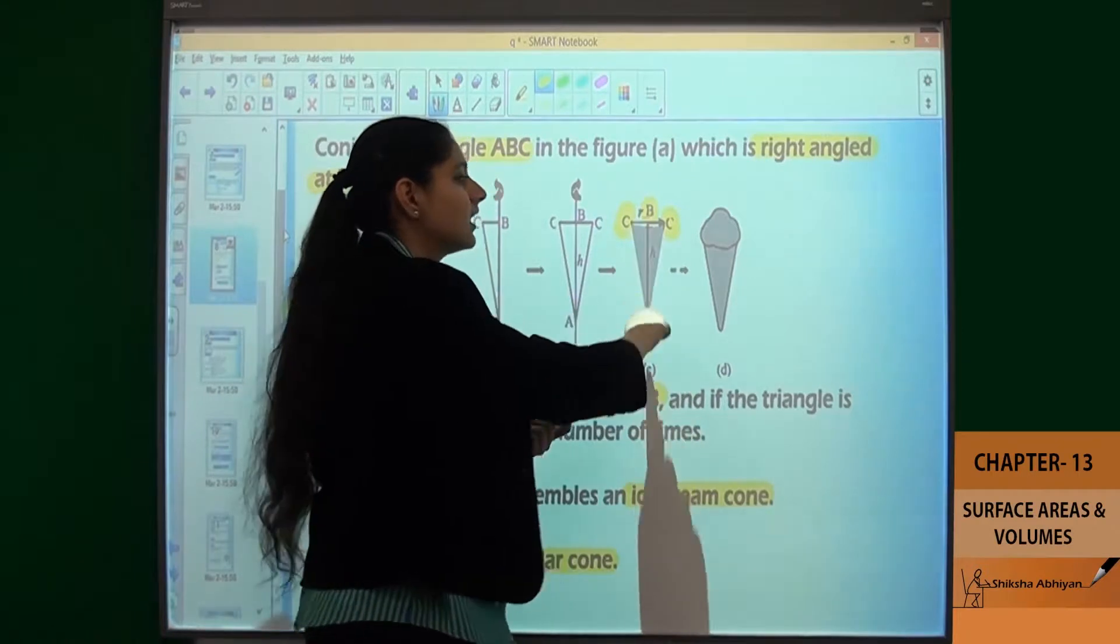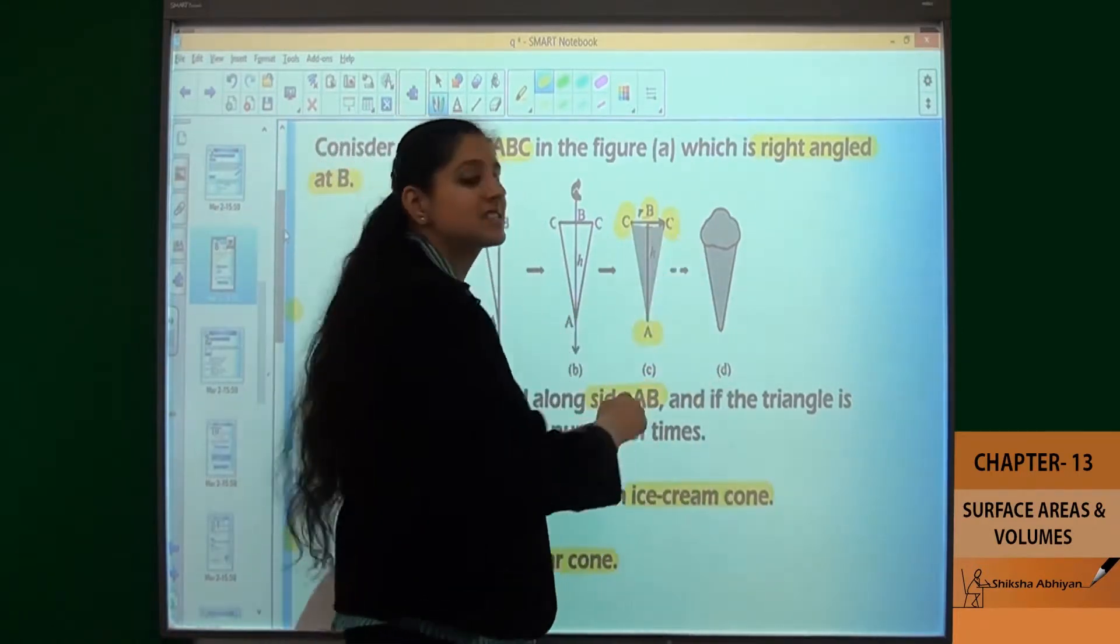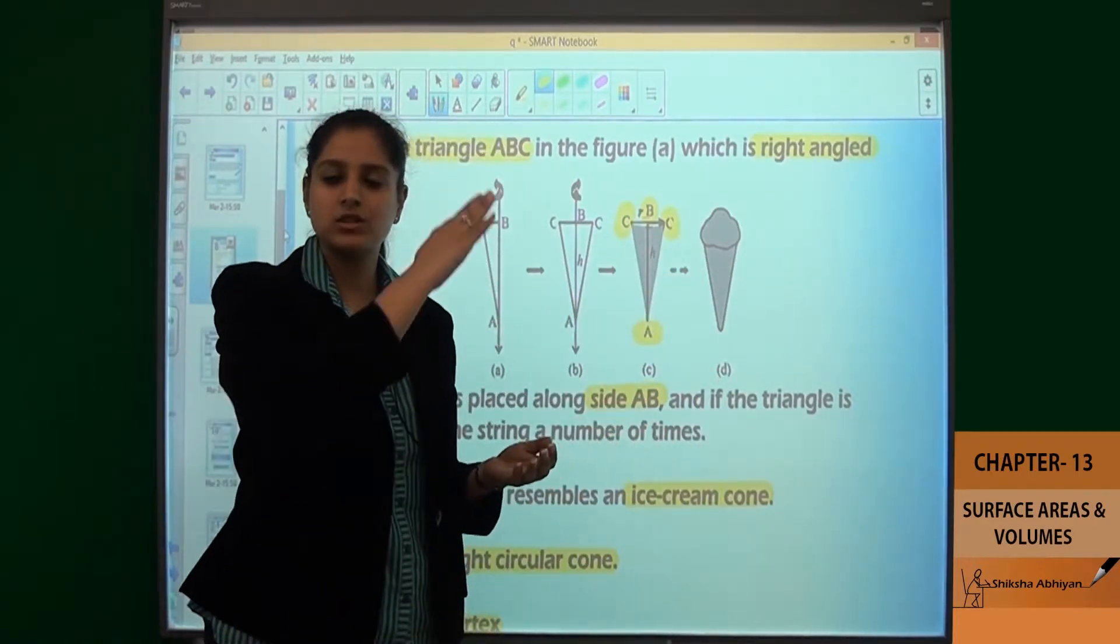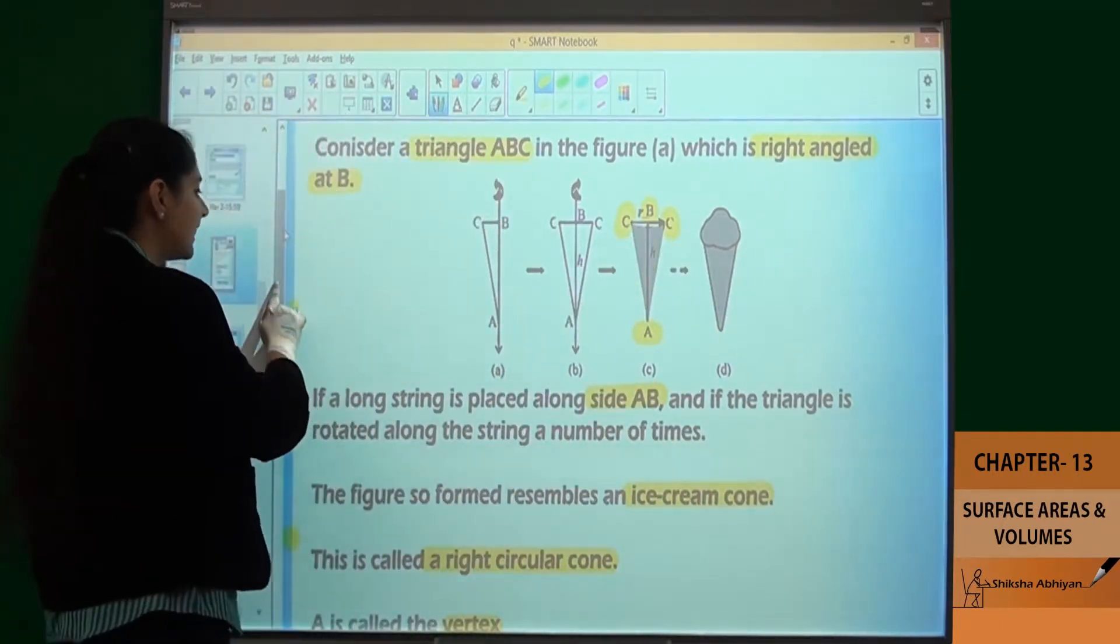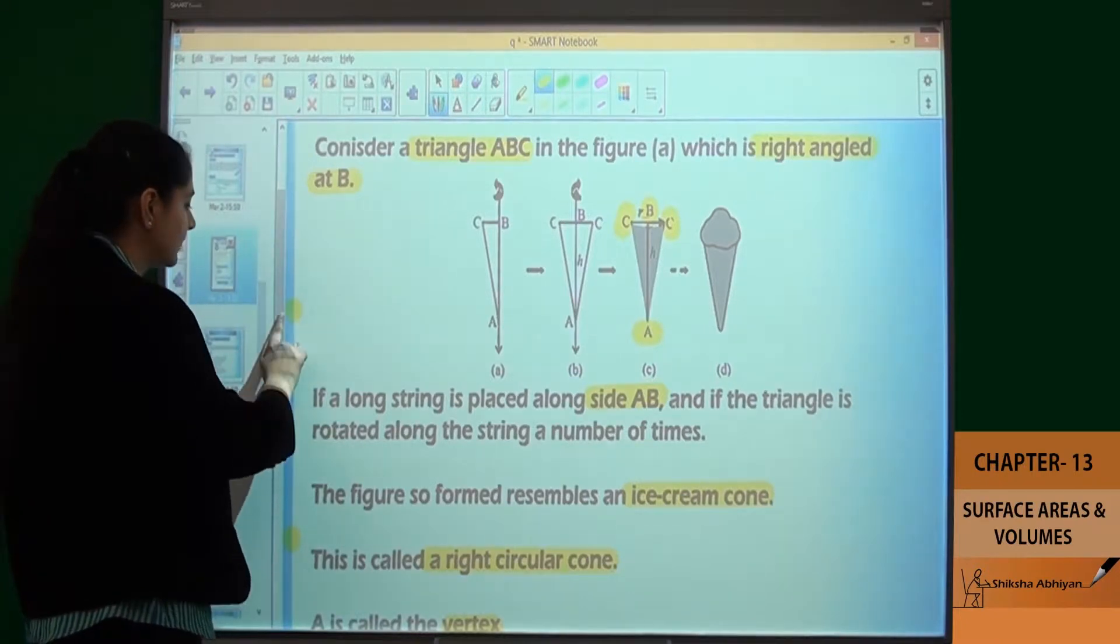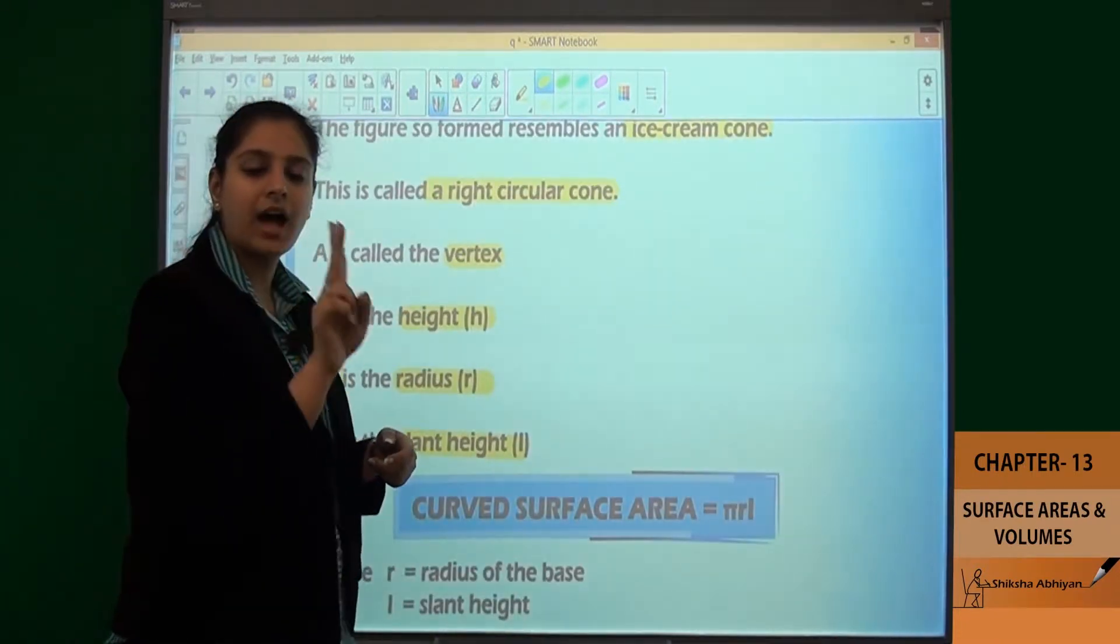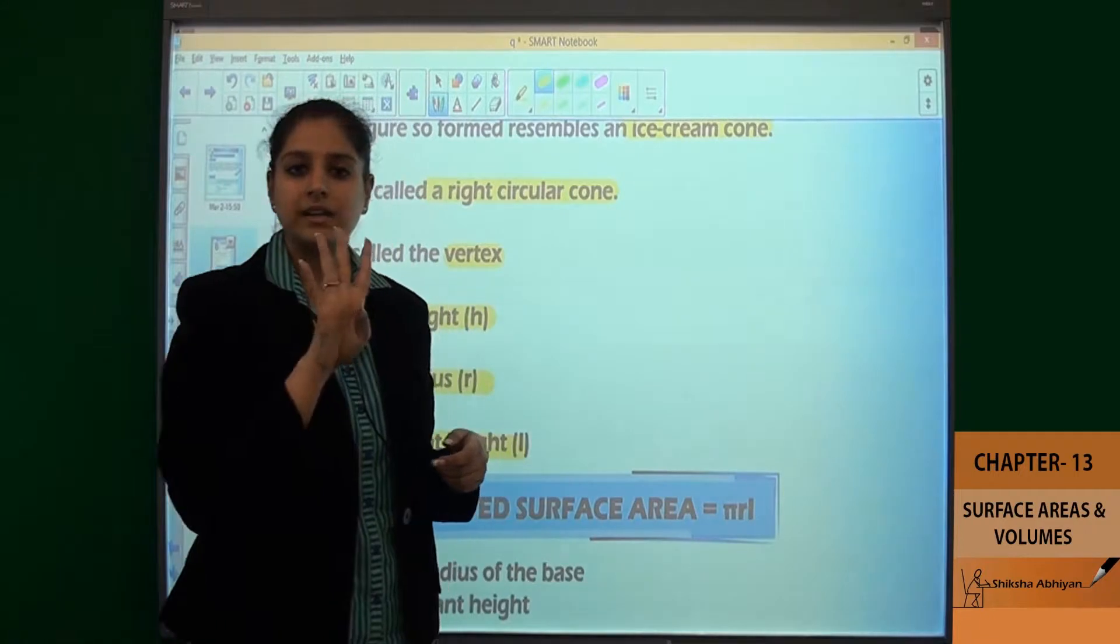AC is the slant height. That tilted side is called the slant height. And BC is the radius. So these are the parts of a cone: First is the vertex, height, radius, and slant height. These are the four parts.